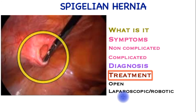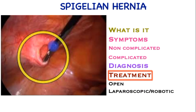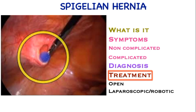The hernia can also be repaired through the laparoscopic or robotic route, and this is a view from the inside showing the defect. This approach is preferable for small hernias which are not visible on the outside or are difficult to detect. On the inside, the defect is identified, the hernia repaired, and then a mesh placed on top to stop the hernia recurring.